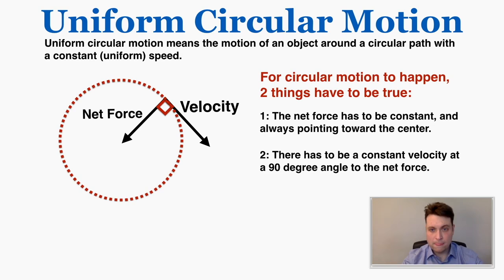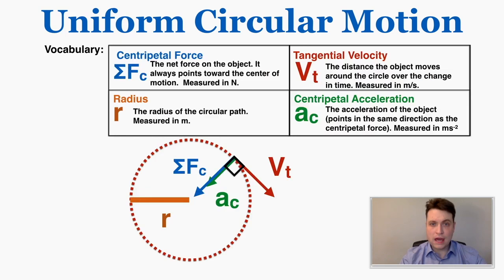This gives us some vocabulary to talk about circular motion. The centripetal force is the name we give to the net force on the object moving in a circle. It always points toward the center of motion and is measured in newtons.